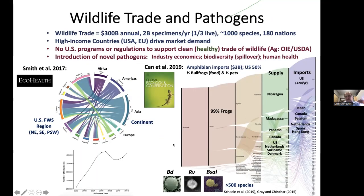I'm going to focus on these three pathogens. They are notifiable by the World Organization for Animal Health, but currently animals that are imported do not have to have animal health certificates for them. BD and BSAL — two types of Batrachychytrium fungus — and ranavirus. Collectively, those pathogens have been responsible for the decline of over 500 species globally.